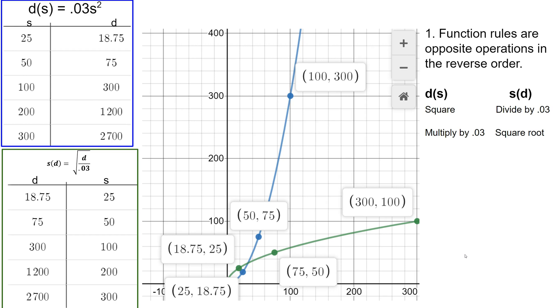So one way I can see that these functions are inverses is because they have opposite operations in the reverse order. So in the d of s function, the blue function on the graph and the blue table and equation, we square s and then we multiply by 0.03. In s of d we do the opposite operations in the reverse order.